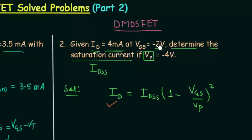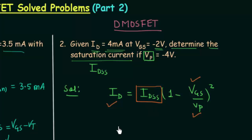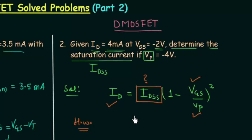VGS and VP are both given in the problem, and the only unknown is IDSS. You can easily calculate the saturation drain current. I am not going to perform the mathematical calculations — you have to perform them. This is homework or an assignment for you. Once you have the value of IDSS, leave your answer in the comment section. I will end this lecture here.